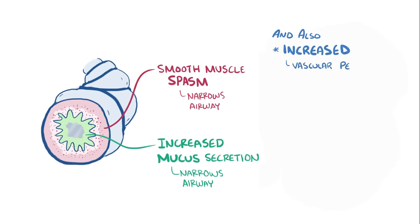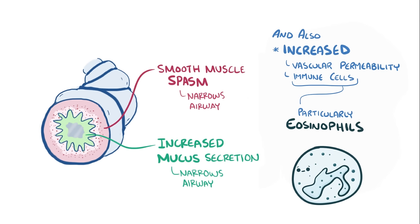There's also an increase in vascular permeability and recruitment of additional immune cells from the blood. These immune cells, especially eosinophils, release chemical mediators that physically damage the endothelium of the lungs.